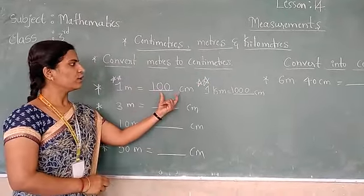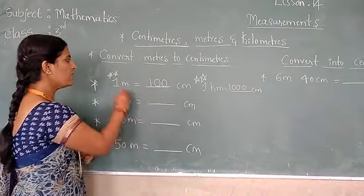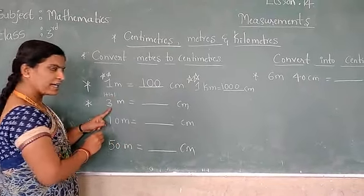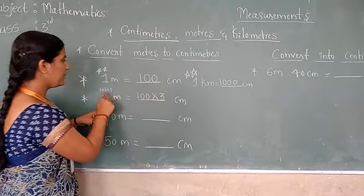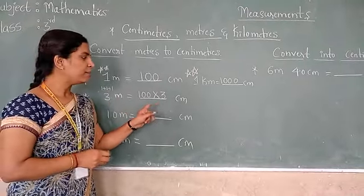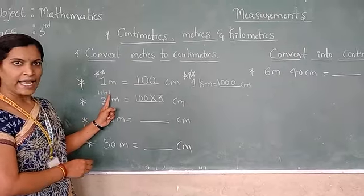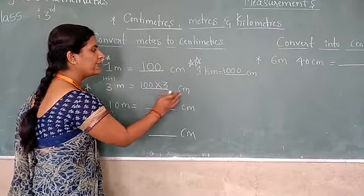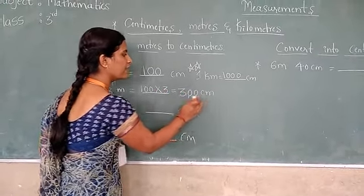Based on this, you can do conversion. Three meters equals how many centimeters? One meter is 100 centimeters. You have to multiply 100 by 3. You already know that multiplication is repeated addition. Instead of adding three times, you can directly multiply by 3. 100 times 3 will become 300 centimeters.